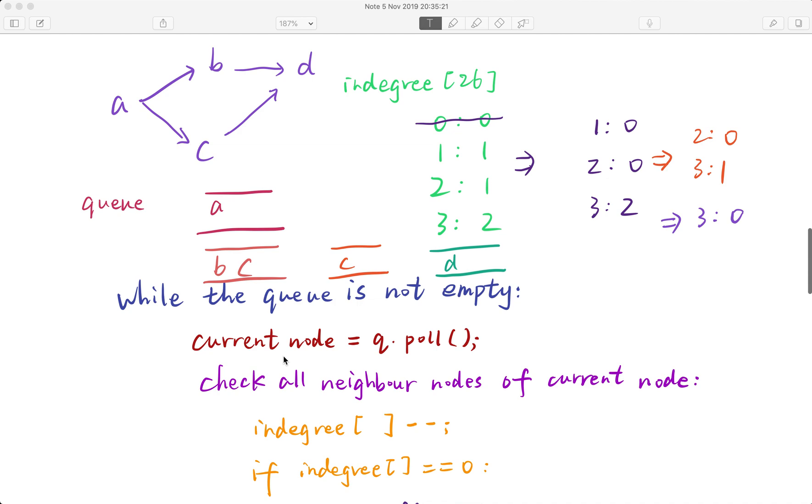We do the same thing. We check the neighbor node of b, which is d, and we decrement the in-degree of d. Now the in-degree of d is just 1. Then we poll c from the queue and check the neighbor nodes of c, which is d. We decrement the in-degree of d, so currently the in-degree of d is also 0, and we can offer d into the queue.